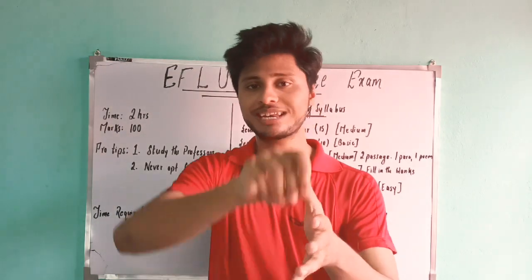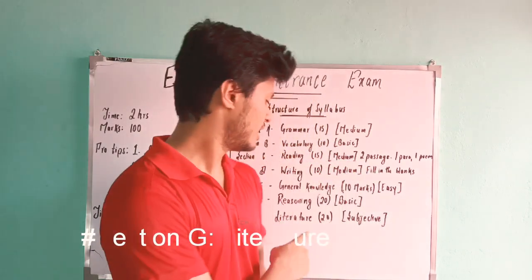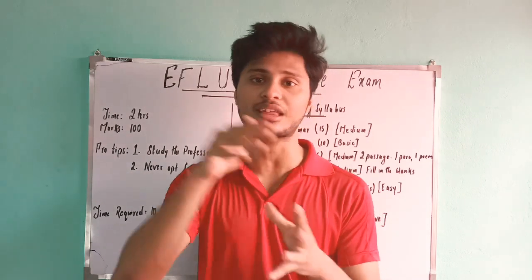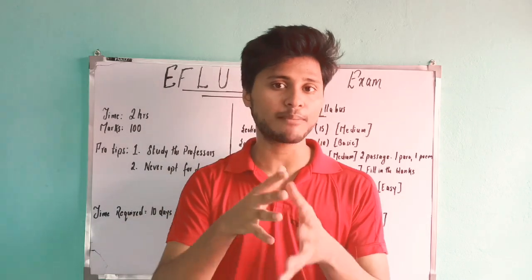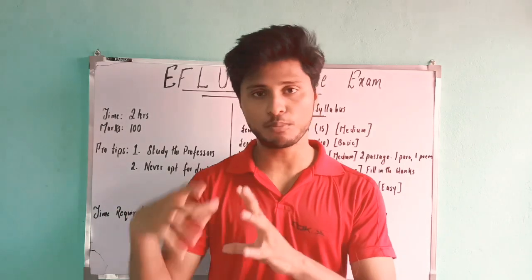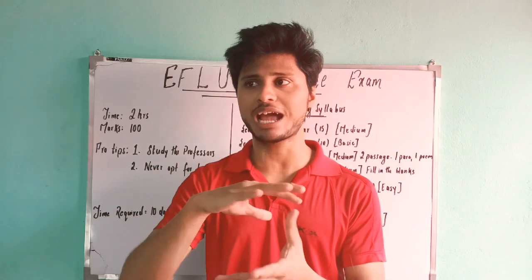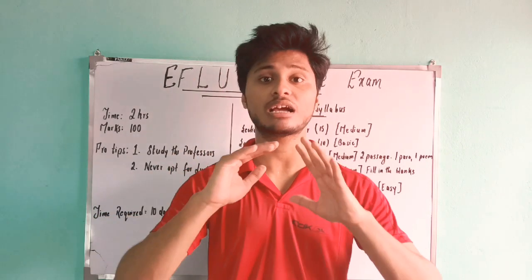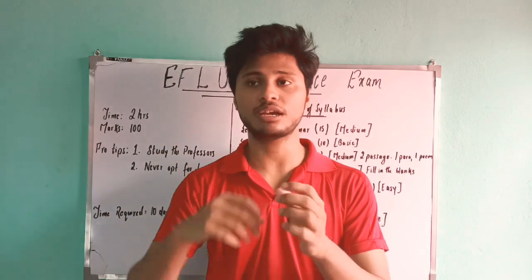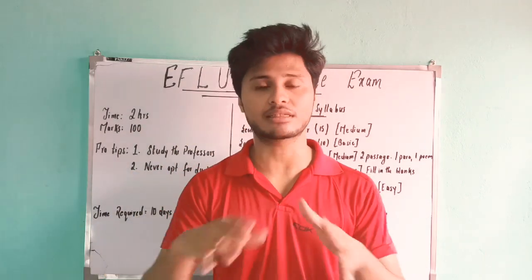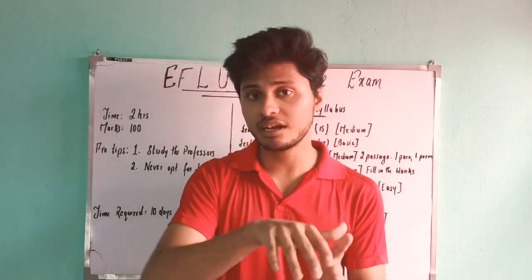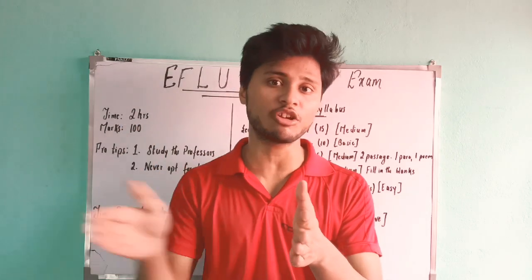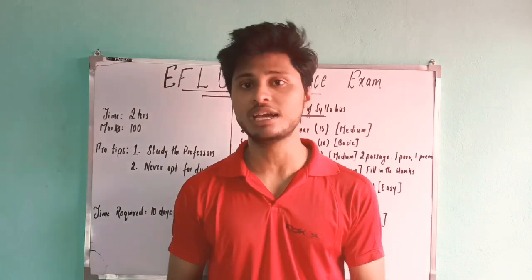The final section is Literature, which consists of 20 marks and is very subjective in nature. If you have been an avid reader of novels, you can score around eight to nine questions easily. The question range is very varied — there could be any novel, including ones you have never read. Questions come from inside the text, so for example, if a question is from Charles Dickens' A Tale of Two Cities, you need to have fully read that novel to answer it.